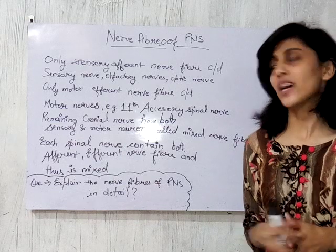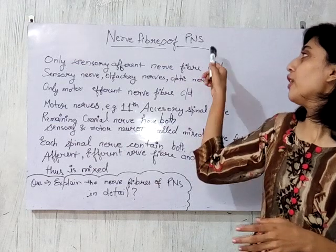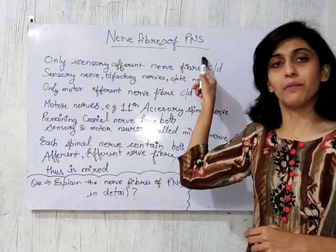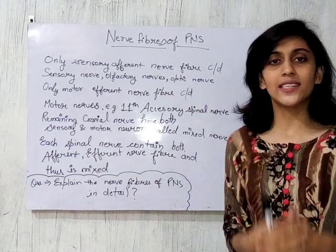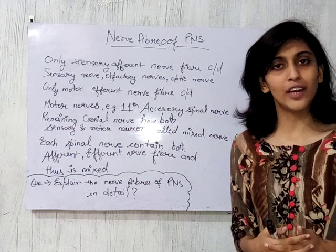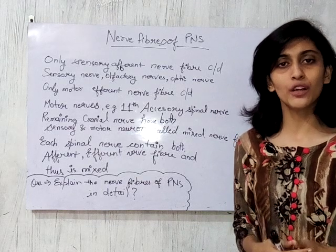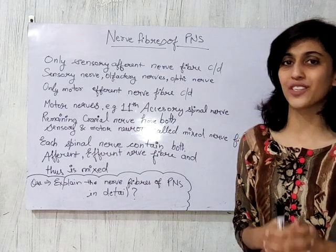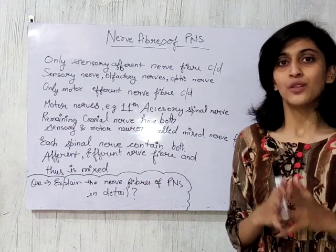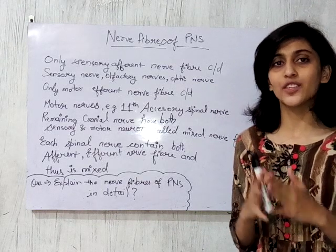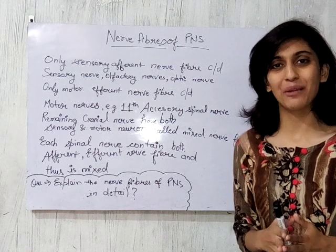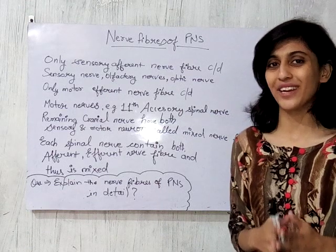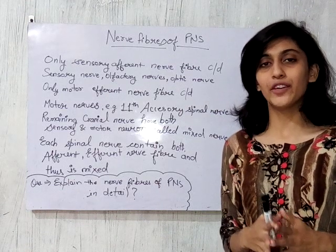So, there are three types of nerve fibers present in the peripheral nervous system: sensory nerve fiber, motor nerve fiber, and mixed nerve fiber. This was the answer for today. If you like my videos, please don't forget to like, subscribe, and share. Have a wonderful weekend.